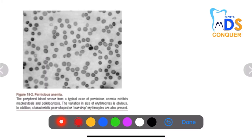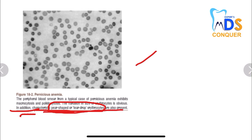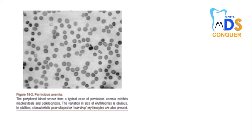Next, pernicious anemia, where you can see macrocytosis and poikilocytosis — variation in size of erythrocytes. The characteristic pear-shaped or tear-shaped erythrocytes are also present. This is an important point to underline. Examiners may pull lines from descriptions given below diagrams in your textbooks — areas we often overlook. For example, the pear/tear-shaped erythrocytes noted here are a key feature of pernicious anemia.